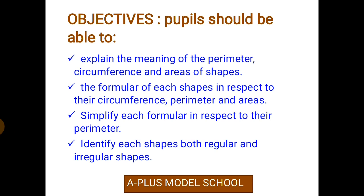Today we have the objectives of the lesson. Pupils should be able to: explain the meaning of the perimeter, circumference and areas of shapes; and use the formula of each shape in respect to their circumference, perimeter and areas.